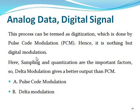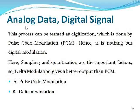Next, we will discuss analog data and analog signal for the next lecture — analog data and digital signal. This process can be termed as digitalization, which is done by pulse code modulation — PCM, which is nothing but digital modulation. Sampling and quantization are important factors for delta modulation. We will show pulse code modulation and delta modulation. So this is the analog and digital data. Thank you all.